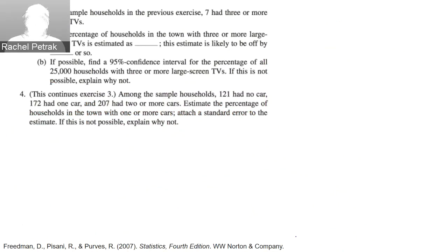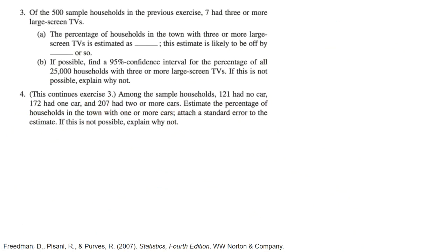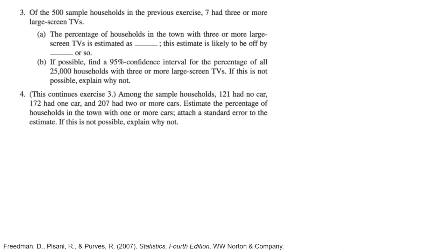Now we have problem three. Of the 500 sample households in the previous exercise, seven had three or more large screen TVs. The percentage of households in the town with three or more large screen TVs is estimated, and we need to get a standard error here.